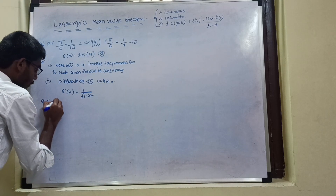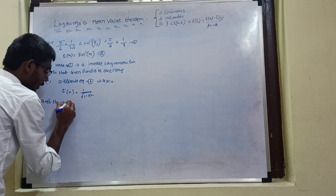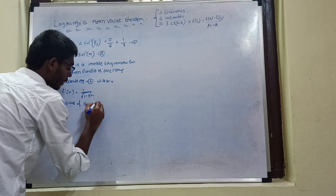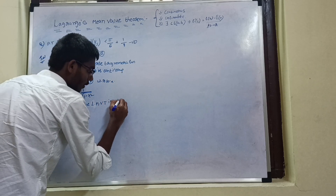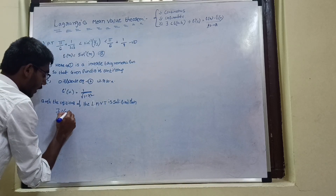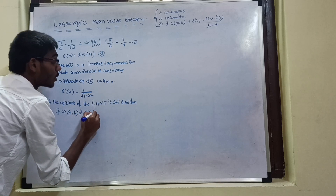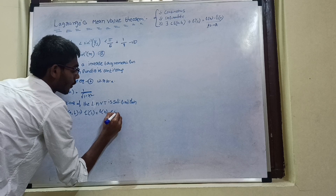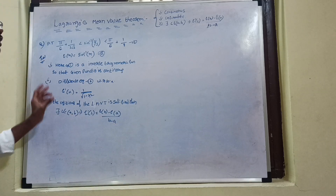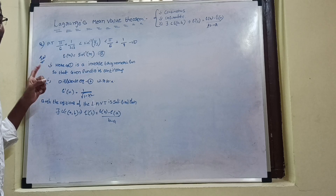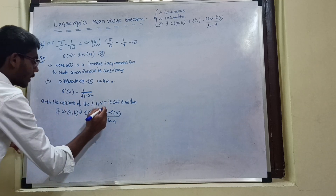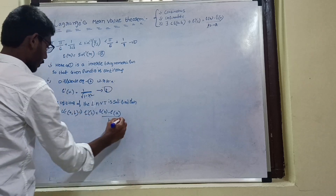Both conditions of Lagrange's Mean Value Theorem are satisfied. Then there exists some c belonging to (a, b) such that f'(c) = [f(b) − f(a)] / (b − a). Since the conditions are satisfied, directly put f'(c) and write it as equation 3, and the LMVT expression as equation 4.